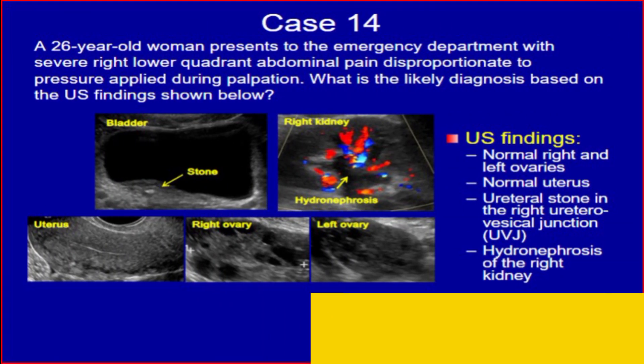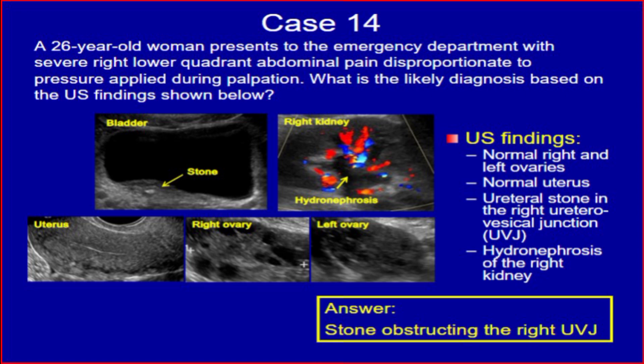The last case in our lecture today is Case 14. A 26-year-old woman presents to the emergency department with severe right lower quadrant abdominal pain disproportionate to pressure applied during palpation. What is the likely diagnosis based on the ultrasound findings shown? Ultrasound findings: normal right and left ovaries, normal uterus, ureteral stone at the right ureterovesical junction, and hydronephrosis of the right kidney.